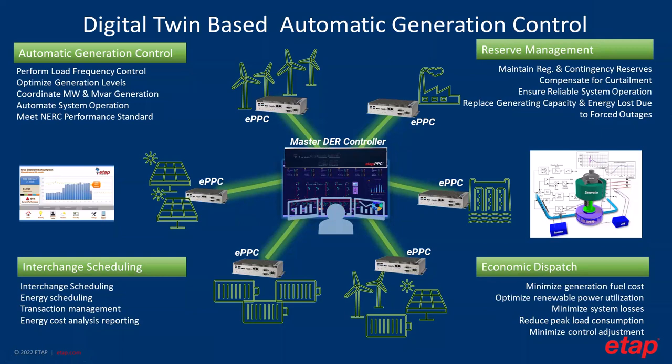On the transmission side, we have the automatic generation control. The transmission side also works with large penetration of distributed energy resources. It is important to manage generation sources. It provides a power plant controller that can communicate to the master DER controller, allowing us to manage the entire generation system including energy storage, hybrid plants, renewables, and conventional generation. Applications such as AGC, interchange scheduling, reserve management, and economic dispatch are part of the master DER solution.